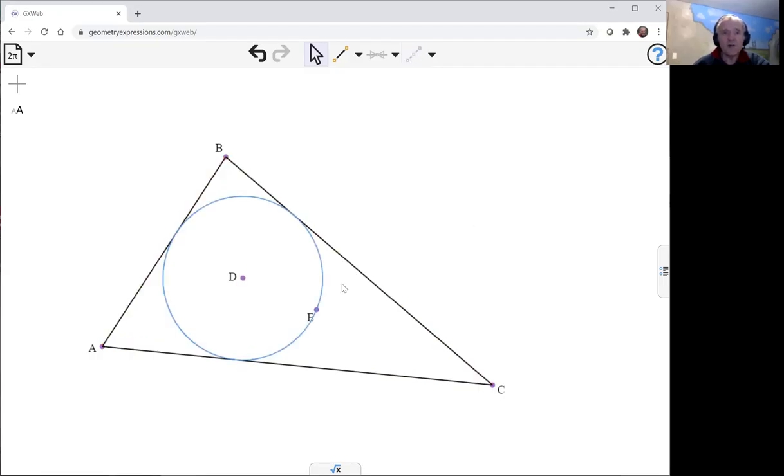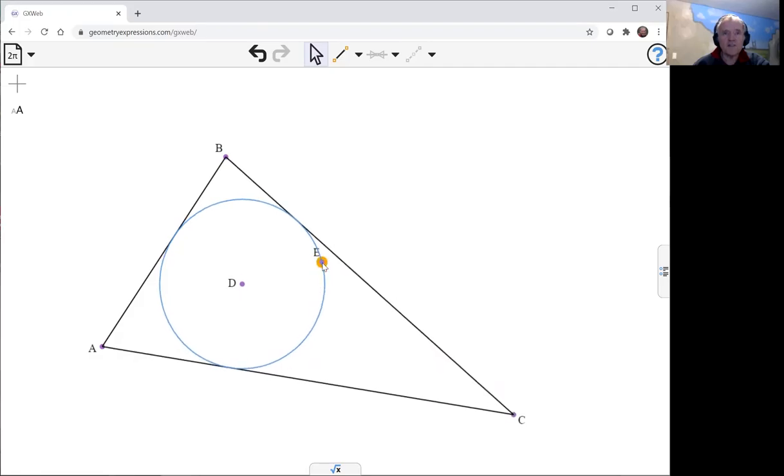Now I'd like these points of contact, this point E, I'd like to lie on that line BC using the incidence constraint and then I can create the other two just by drawing and have them fall in place at the point of contact.